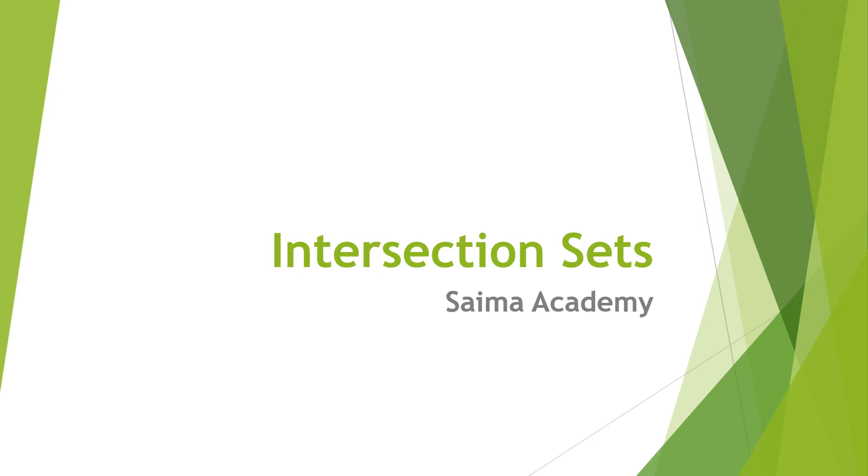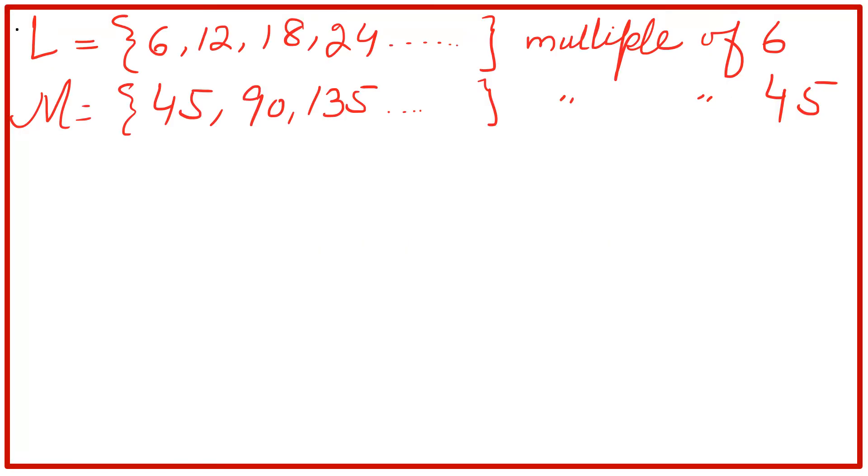In this lesson we will discuss intersection of sets and multiples. Suppose we have two sets: L equals 6, 12, 18, 24, and so on. These are the multiples of 6. You can see 6 times 1 is 6, then 12, 18, 24, 30, 36, 42, 48, and so on.